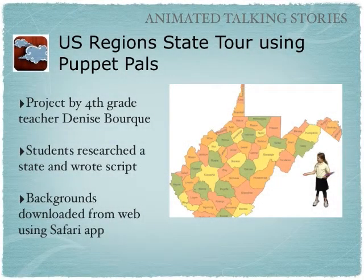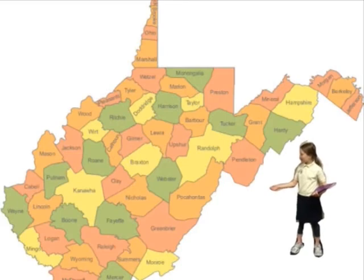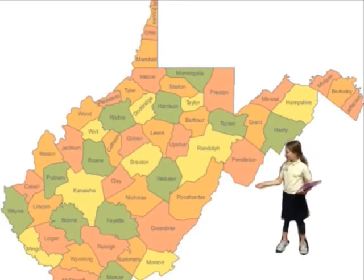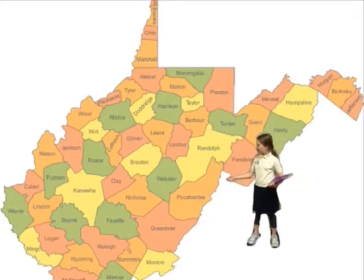Another way you could use Puppet Pals is with social studies. Our fifth grade teacher had been working on U.S. regions, so each student researched a state, wrote a script, went online on the iPad, downloaded pictures of that state to use as backgrounds, and took a photograph of themselves working with a partner to make their own little video tour of the state. Their body moves around pointing at different things in the photo, showing everything they learned about that state. For example: 'I am here to tell you about West Virginia. West Virginia's capital is Charleston. It was admitted to the Union on June 20, 1863. Sometimes people call West Virginia the Mountain State.'